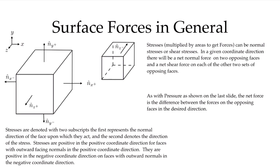Now we need to work through surface forces more carefully, as they're a little harder to think about. First, let's recall the surface normals. For the control volume in three dimensions, we define an outward-facing normal vector on each face: on the x-plus face, on the x-minus face, on the y-plus face, and so on for all faces, as shown in the figure.